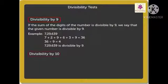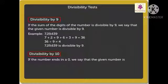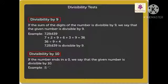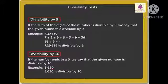Divisibility rule by 10: if the number ends in 0, we say that the given number is divisible by 10. For example, 8620 — the 1's place has 0, so 8620 is divisible by 10.